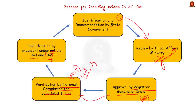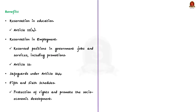Now, the benefits of inclusion under the ST list. First is reservation in education — ST individuals have reserved seats in educational institutions ensuring better access to quality education, ensured under Article 15(4) of the Indian Constitution. Next is reservation in employment — ST communities are provided reserved positions in government jobs and services including promotions, ensured under Article 16. There are also various safeguards under Article 244 along with the Fifth and Sixth Schedules of the Constitution, which safeguard rights and promote the socio-economic development of scheduled tribe communities living in tribal areas.